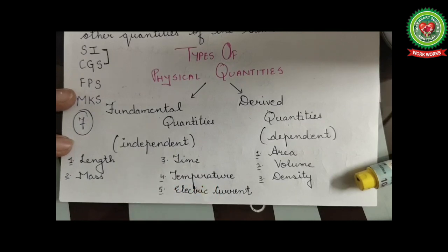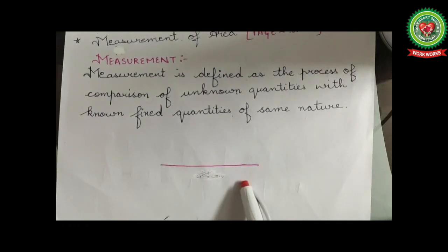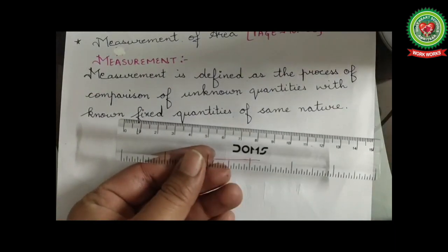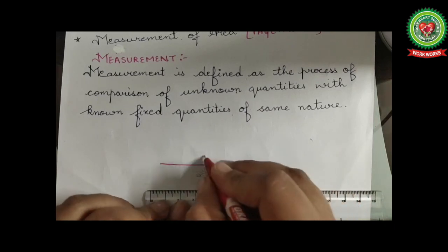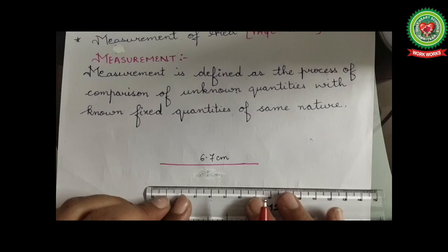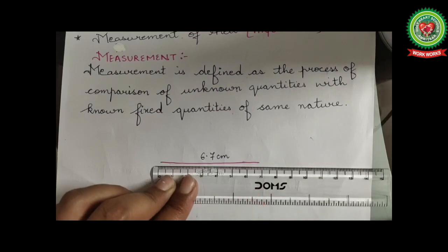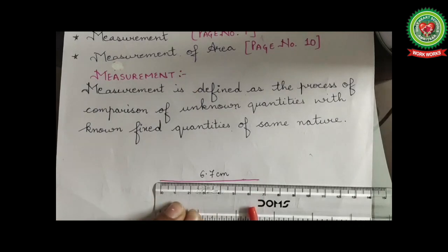The seven fundamental quantities are length, mass, time, temperature, and electric current — which is in your syllabus — plus luminous intensity and amount of substance, which we'll cover in senior classes. Coming to our topic of measurement: suppose I want to measure the length of a line. Length is an unknown physical quantity to me. I'll use a scale, which acts as a known quantity, and measure — it's 6.7 centimeters. So measurement means comparing an unknown quantity with a known fixed quantity of the same nature.